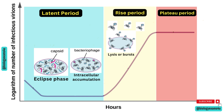This is followed by the plateau period. After the initial burst of phages, the number of free phage particles reaches a plateau. This occurs because the available host cells are all being lysed, so new phages cannot find a suitable host for infection.